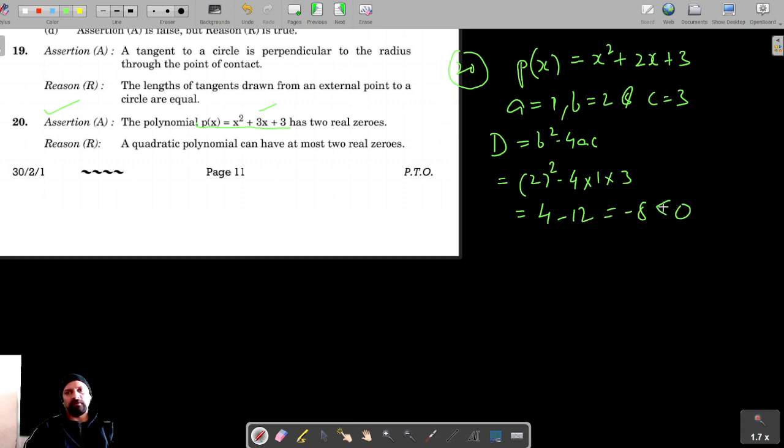The value is negative, which is less than zero, so roots are not real. That means the assertion is false. Now, a quadratic polynomial can have at most two real zeros, which is true.